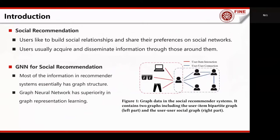Luckily, with the rapid development of social networks, more and more people like to build social relationships and share their preferences on these platforms. As well-supported by the social influence theory, users usually acquire and disseminate information through those around them, implying that underlying social connections can provide valuable information. Since most information in recommender systems exhibits graph structure and GNN has superior ability in graph representation learning, GNN-based social recommendation has emerged as a promising direction and attracts increasing attention.